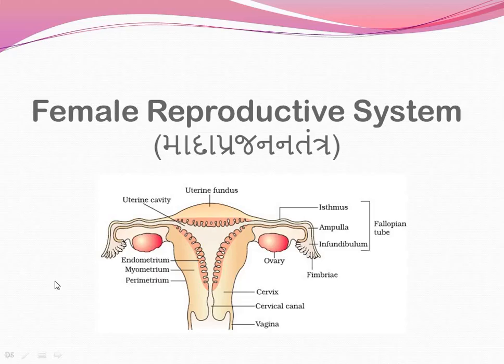Hello students, hope you are all enjoying online studies and understanding what I am delivering through these video lectures. In the last lecture we completed the male reproductive system, male reproductive hormones, sex hormones, and did the overview of the anatomy of the male reproductive system. Now we are going to the female reproductive system. The NCRT diagram is just one by one - all the structures and names and details.